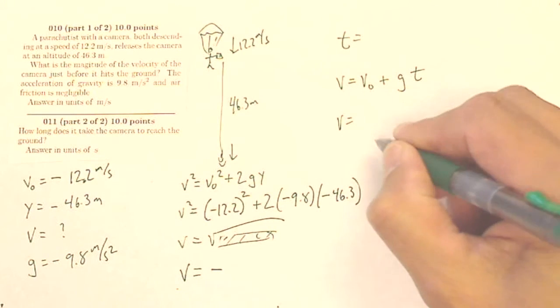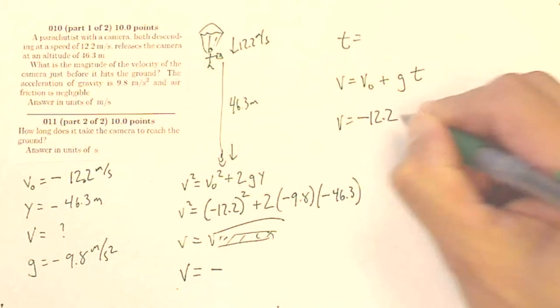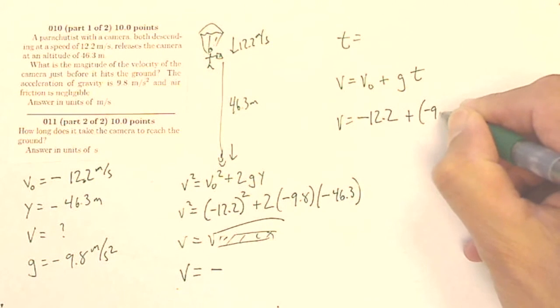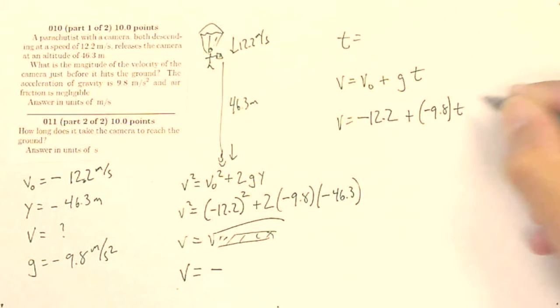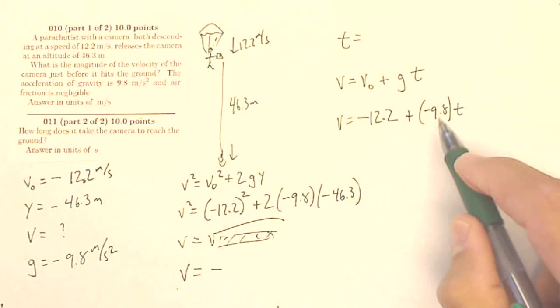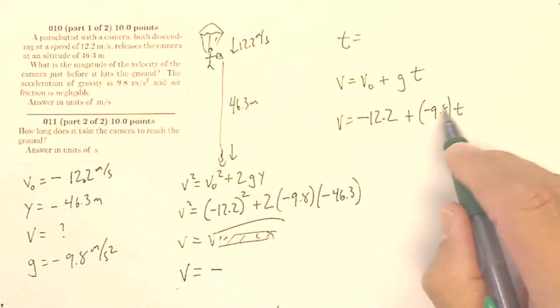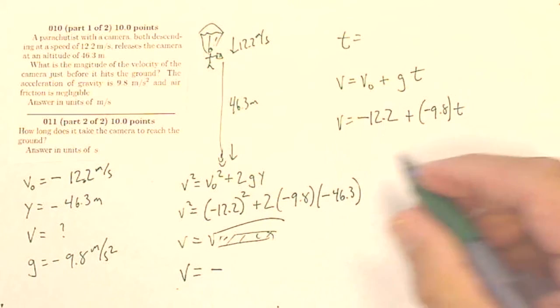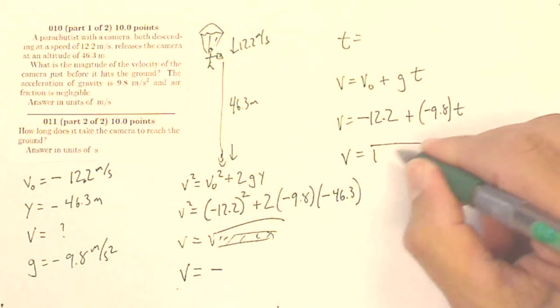is my initial velocity, which is negative 12.2, plus my negative 9.8 times a positive amount of time. So this is negative, this is negative, so this is all going to be more negative, and I'll get a final velocity that's a pretty big value. So there's my final velocity.